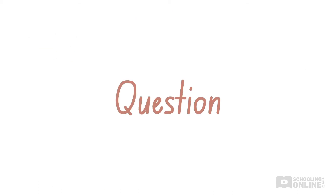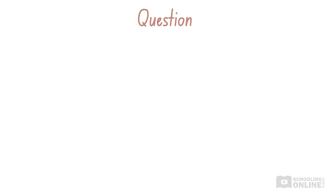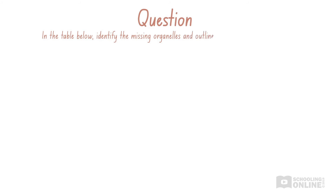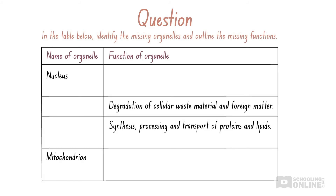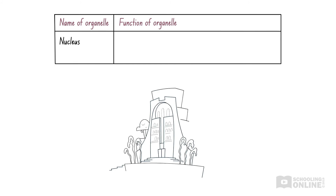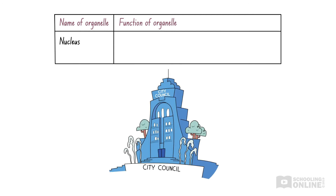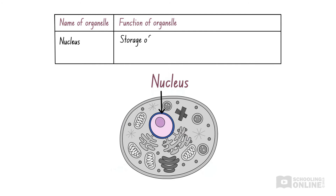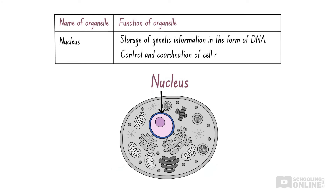Now let's revise what we've learned by looking at a sample question. In the table below, identify the missing organelles and outline the missing functions. Let's start with the first row — we need to outline the function of the nucleus. We compared the nucleus to a city council, which documents and manages everything in Zoo York. The nucleus stores all the hereditary genetic information, or genes, of the animal in DNA. It also controls and coordinates cell activities, such as cell growth.